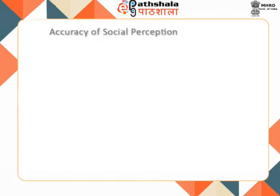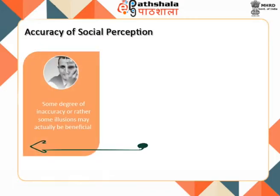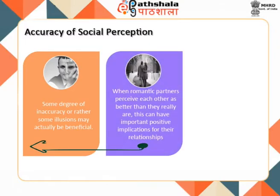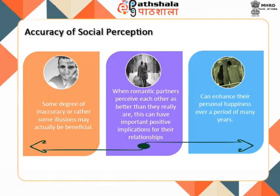A growing body of evidence indicates that in social perception, as in many other areas of life, some degree of inaccuracy or illusion may actually be beneficial. Recent research findings indicate that when romantic partners perceive each other as better than they really are, this can have important positive implications for their relationships and can enhance personal happiness over many years.